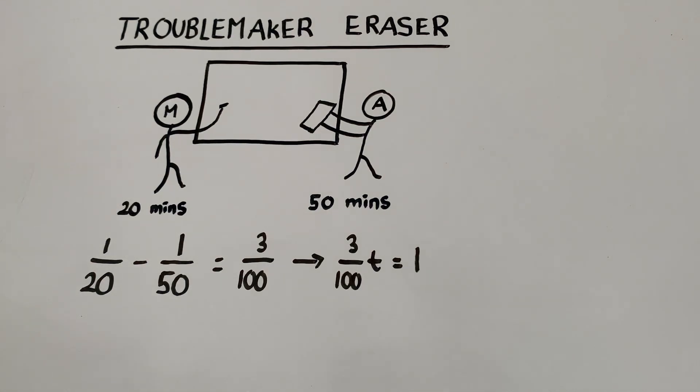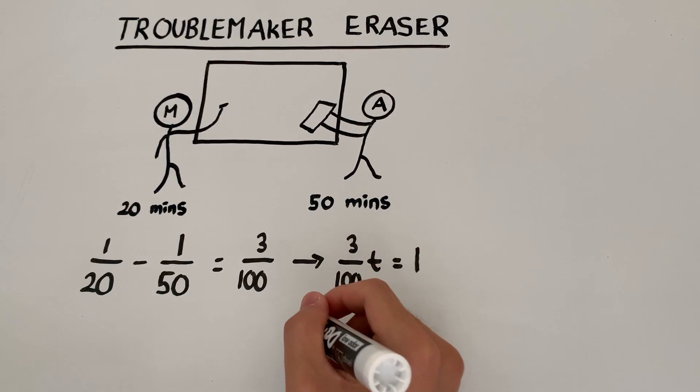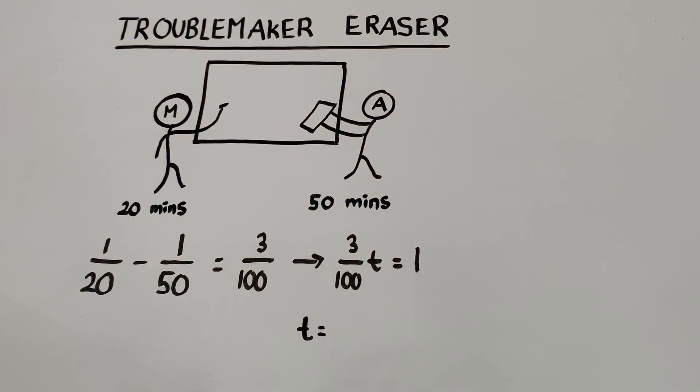So, we see that solving for T is not the hard part. The hard part is actually setting this equation up. Now, from here, we can find T easily. We see that T equals 100/3, which also simplifies to 33 and one-third minutes.